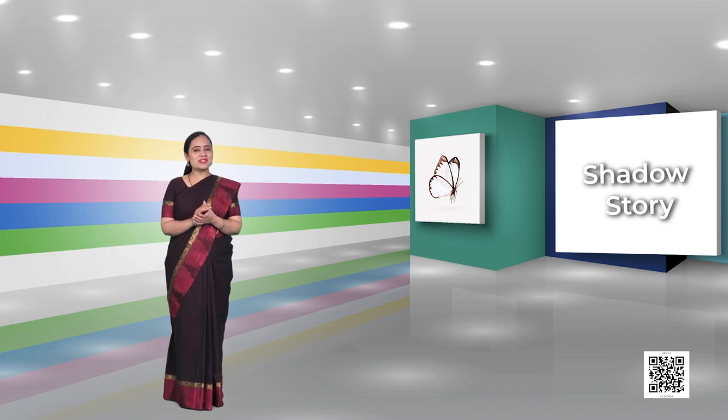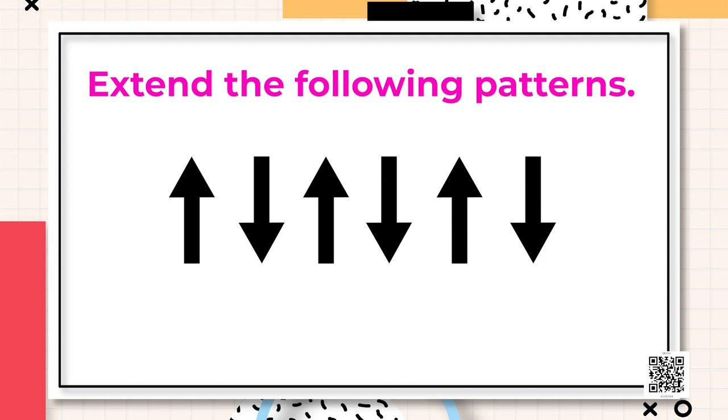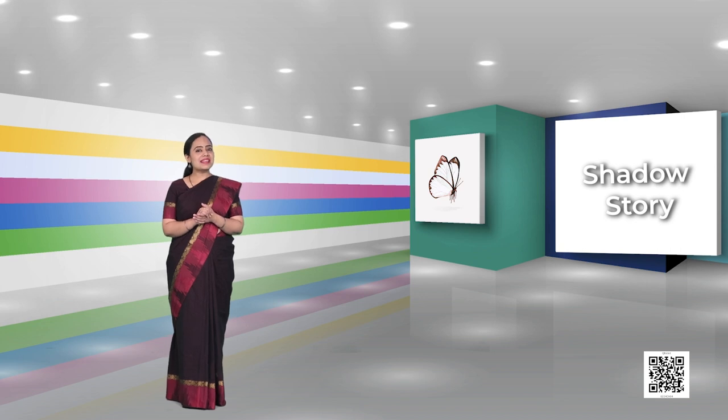In the first pattern we see some arrows. Yes, one arrow is pointing upward and another is pointing downward, then upward, then downward. So like this you can complete this pattern.